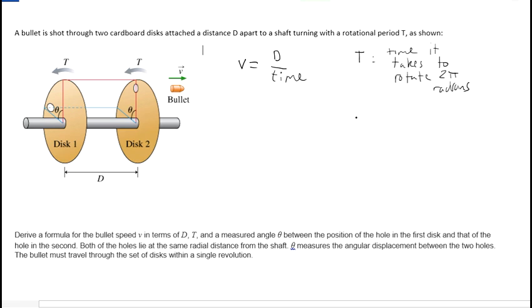And so, that's the time it takes to rotate 2π radians. We want to know the time it takes to rotate theta radians. Well, we take the ratio of theta to 2π and we times it by T. So this is the time it takes to rotate theta.